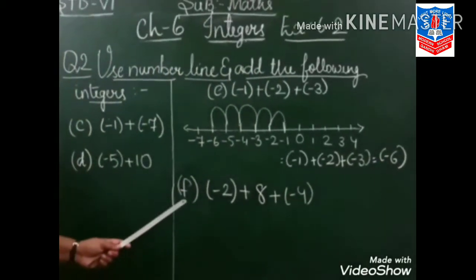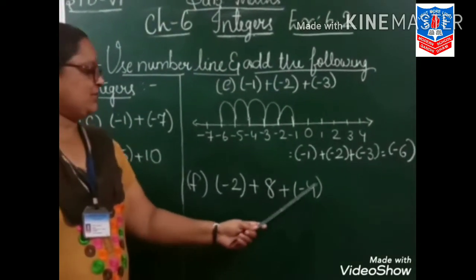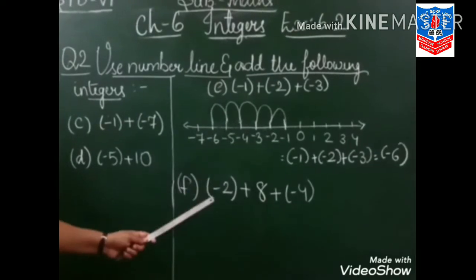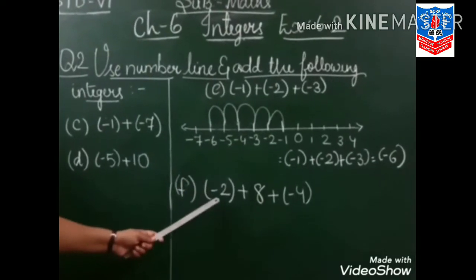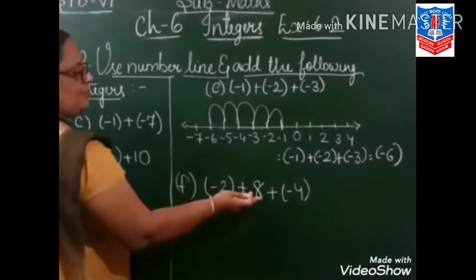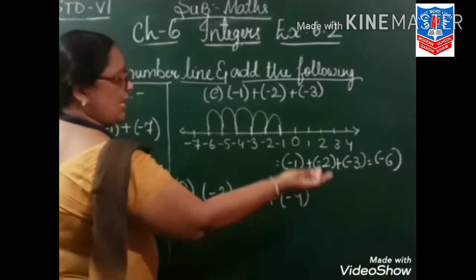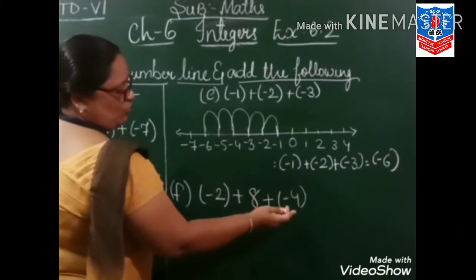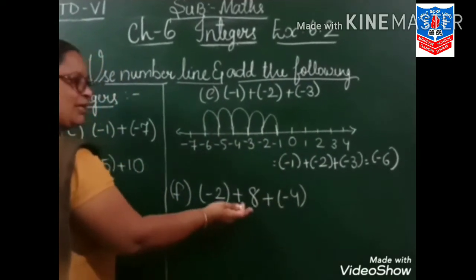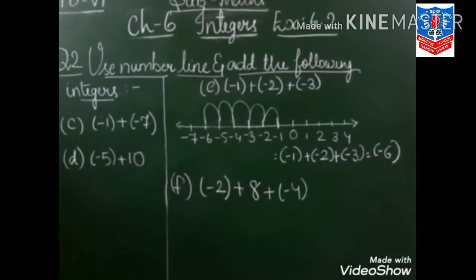F: minus 2 plus 8 plus minus 4. Now how you will do this sum? First from minus 2, you will move 8 steps to the right. And from there, you will move minus 4 to the left side. This is your homework.